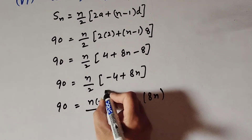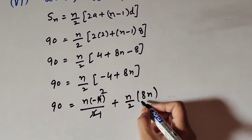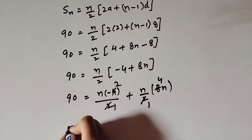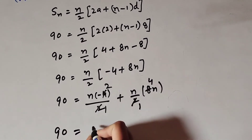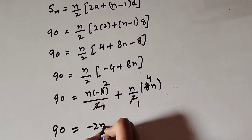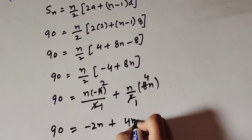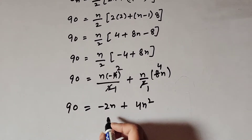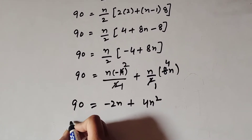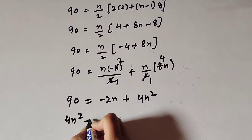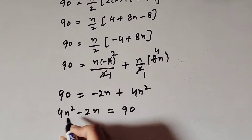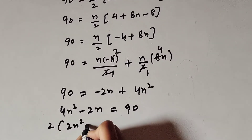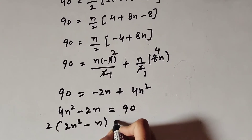Both 4 and 2 are divisible by 2, so we cancel them. This gives 90 equals minus 2n plus 4n squared. Taking 2 common: 2 times 2n squared minus n equals 90.